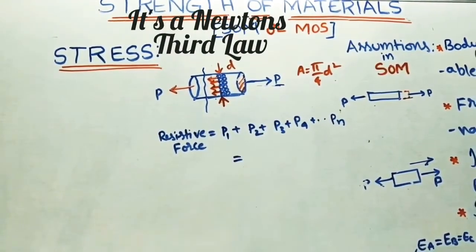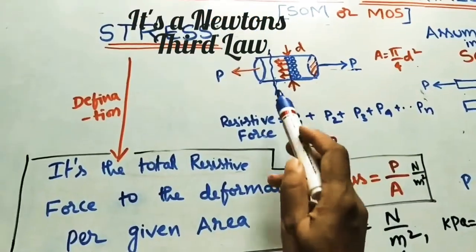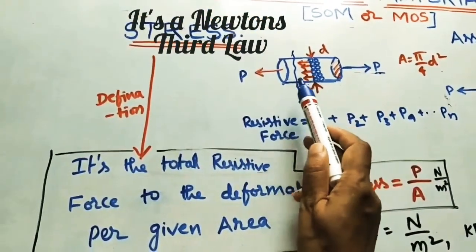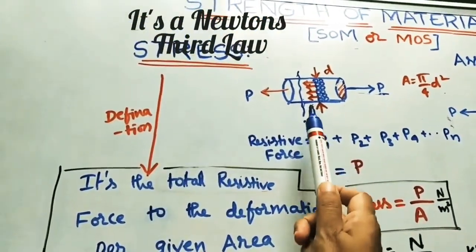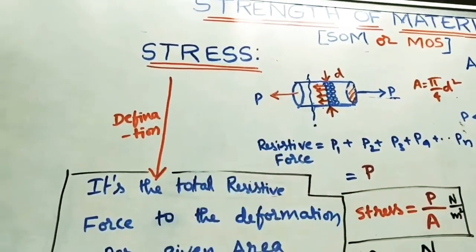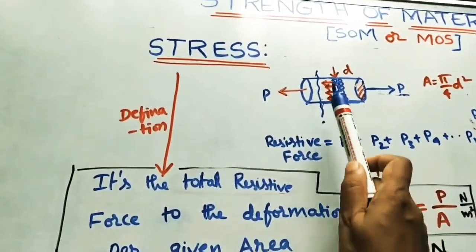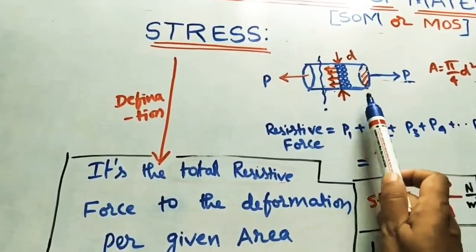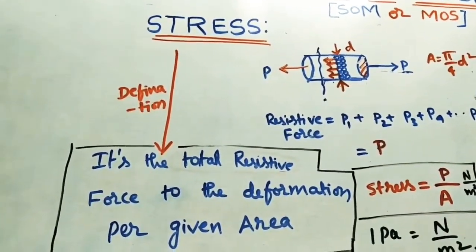So I am taking this is the applied force. So whenever these molecules are coming back to its original position, we can tell this object is under stress. So stress means it is nothing but total force, total resistance force for a given area, per unit area we can call.